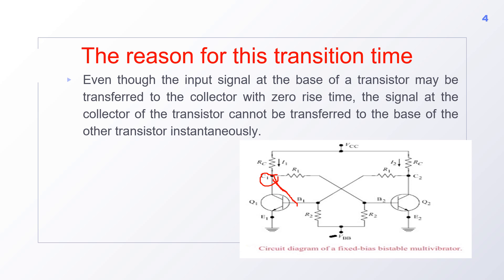The signal at the collector of transistor Q1 cannot be transferred to the base of another transistor instantaneously. The signal from the base of the ON transistor will be transferred to the output of that particular transistor within zero time. But the signal at the collector of the first transistor cannot be transferred to the base of another transistor instantaneously — it will take some time.